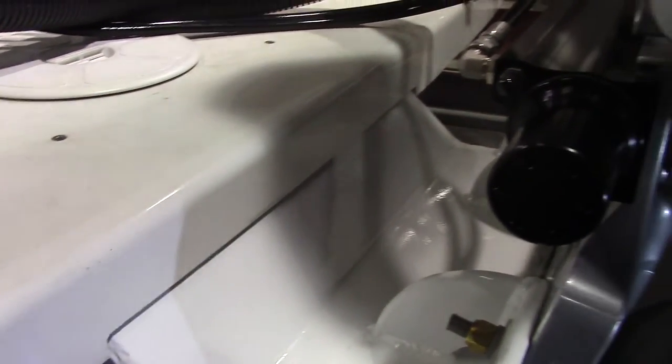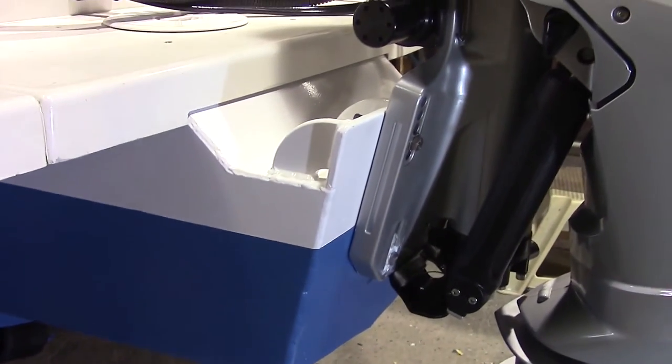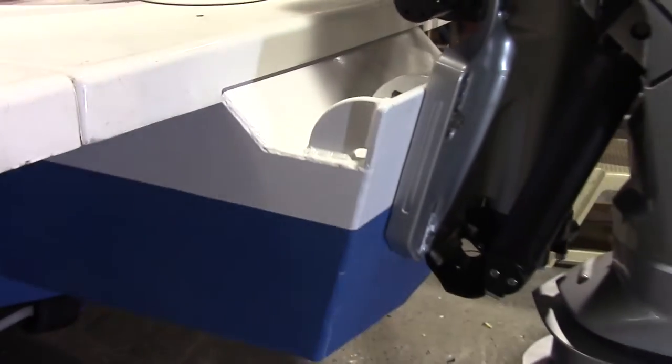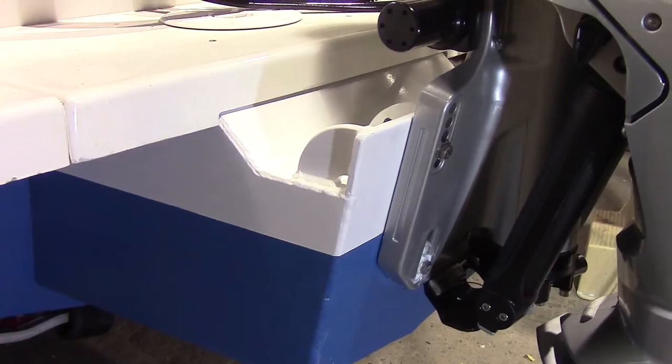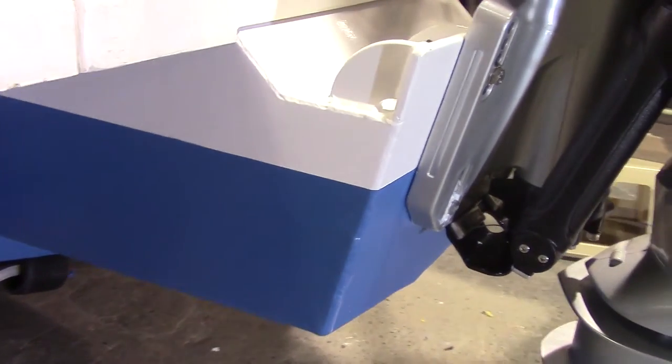That's mostly it. We've got certain thicknesses of aluminum that we use. It's all welded up and then powder coated white, and then the bottom is painted blue. Underneath that is epoxy.